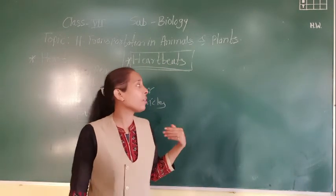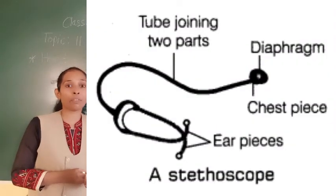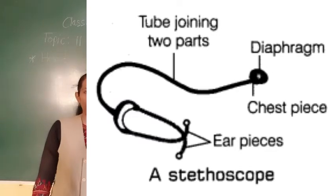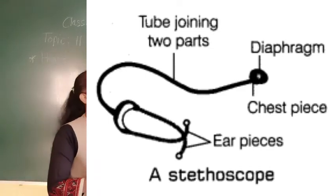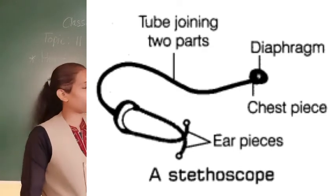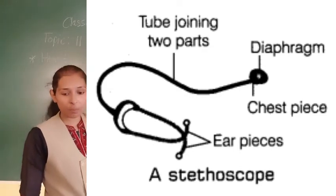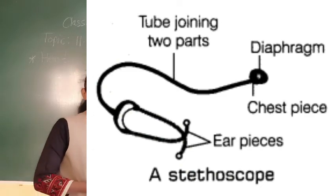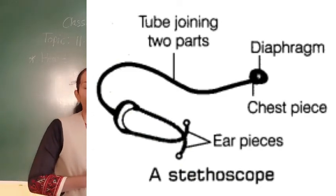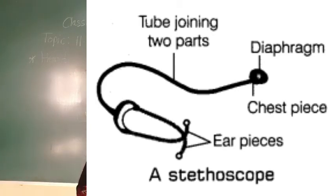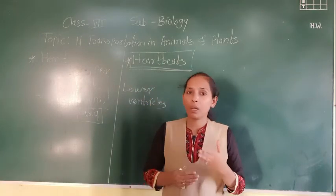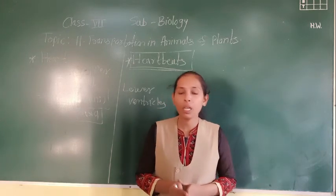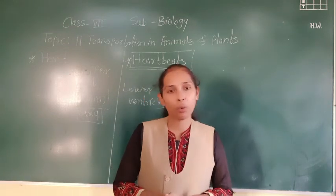The stethoscope has different parts: the ear piece, the chest piece with a sensitive diaphragm, and tubes connecting them. We can also make a simple stethoscope using things available at home — that activity is Activity 11.2 given in your textbook.